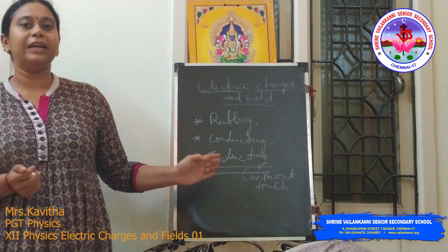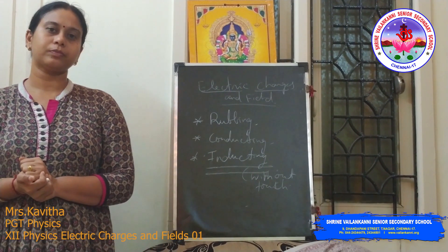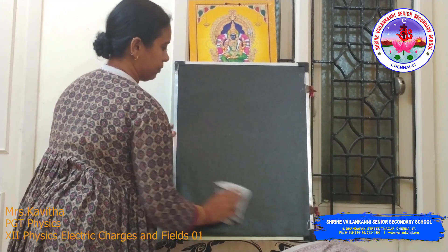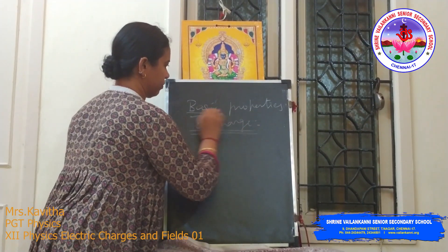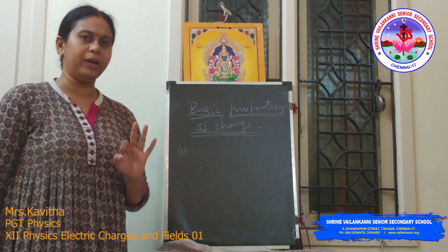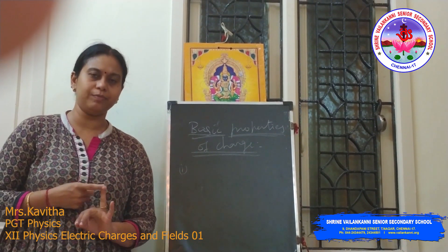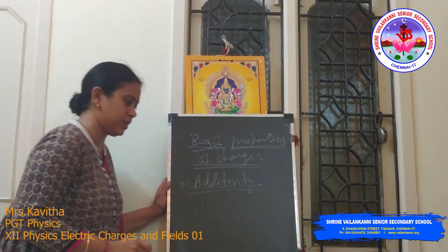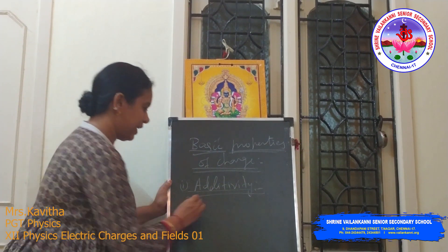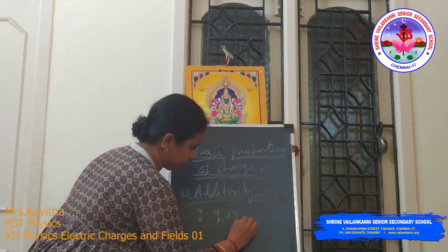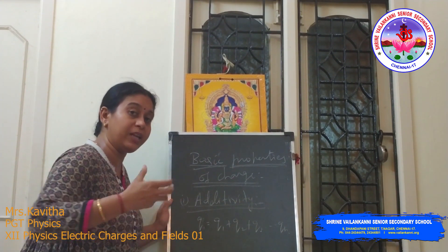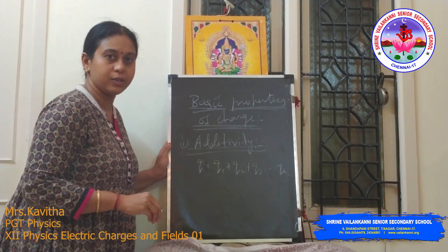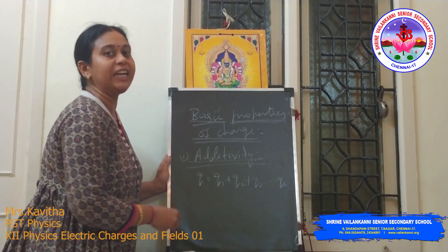The next one is the basic properties of charge. There are just three properties: additivity, quantization, and conservation. The first is additive in nature — additivity means the total charge of a system is equal to the sum of individual charges, up to n number of charges in the system.